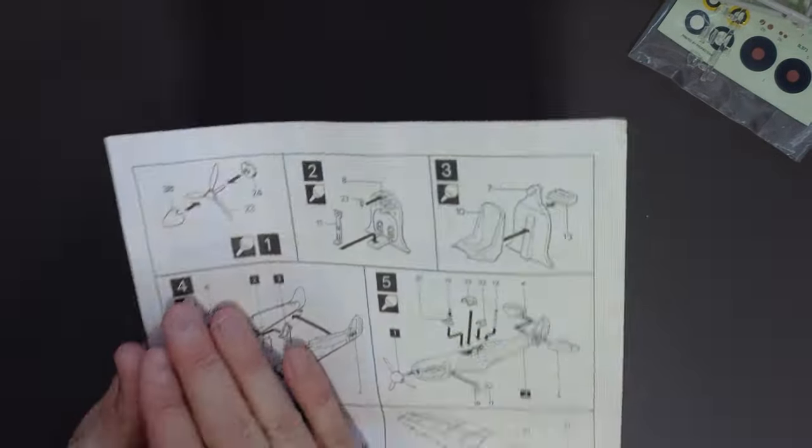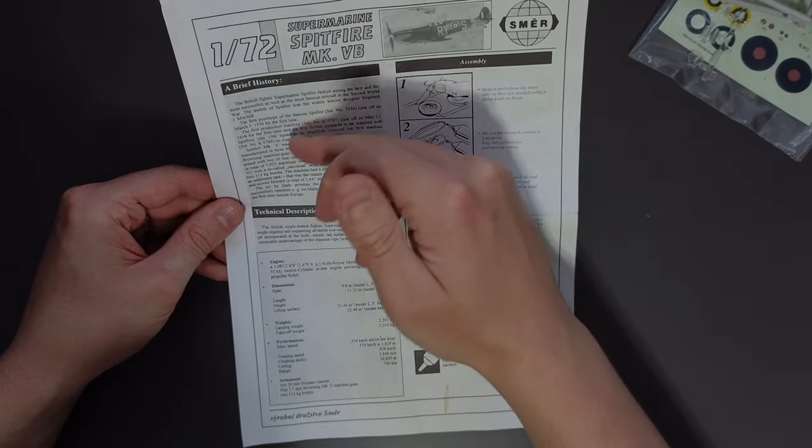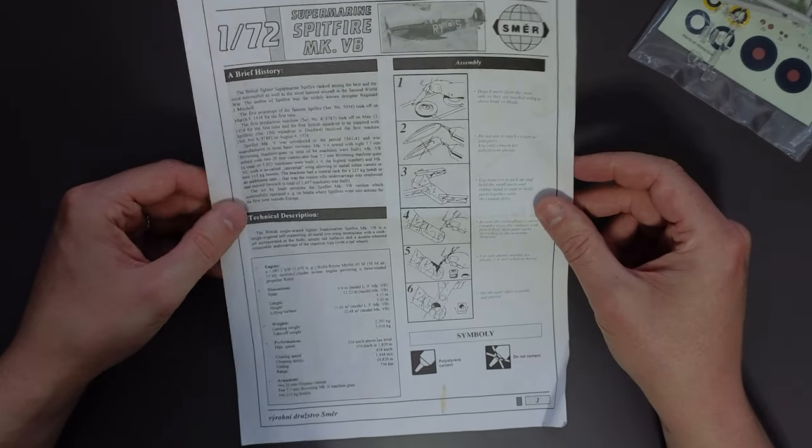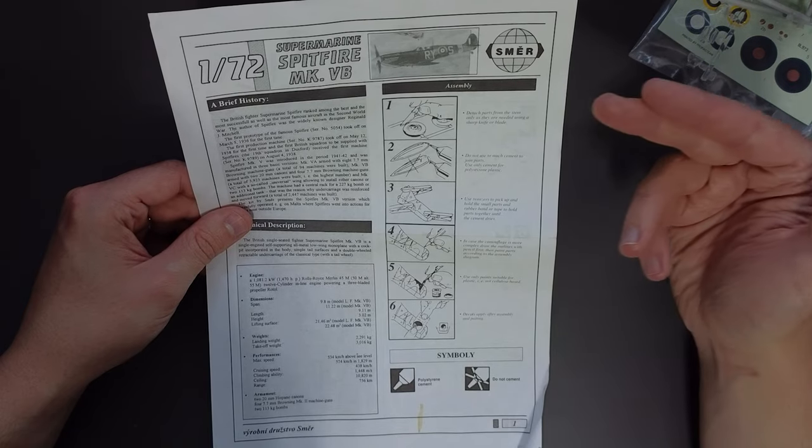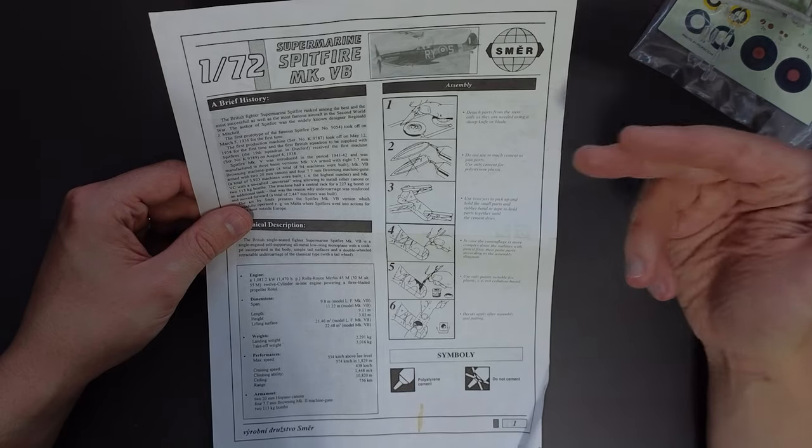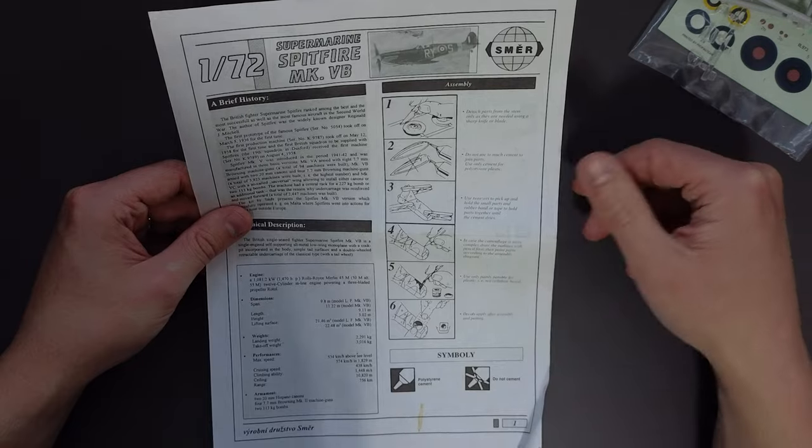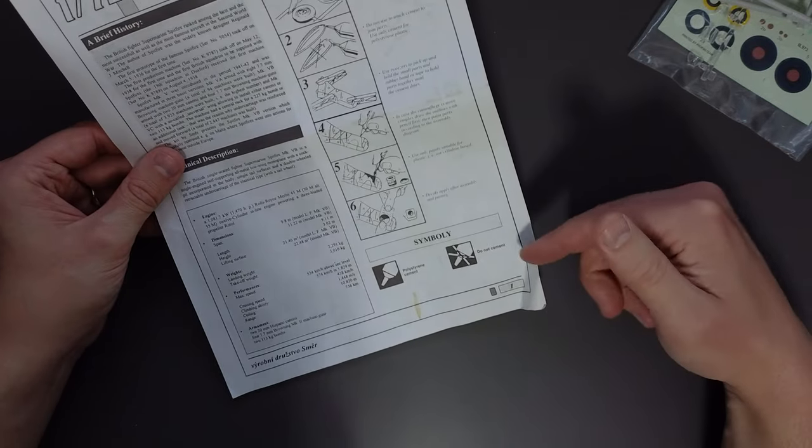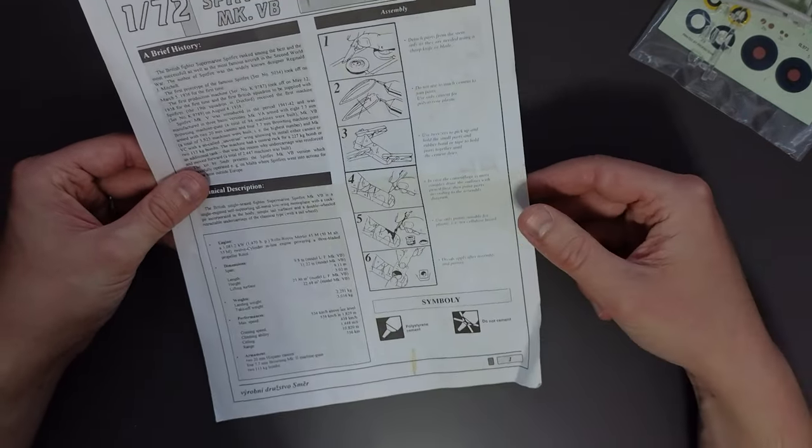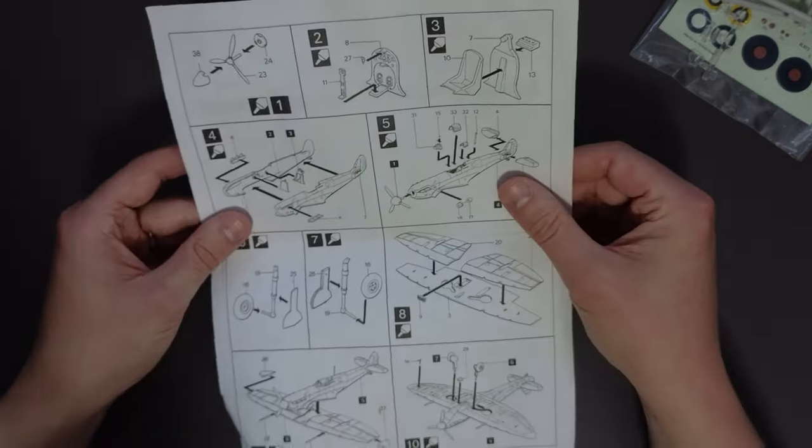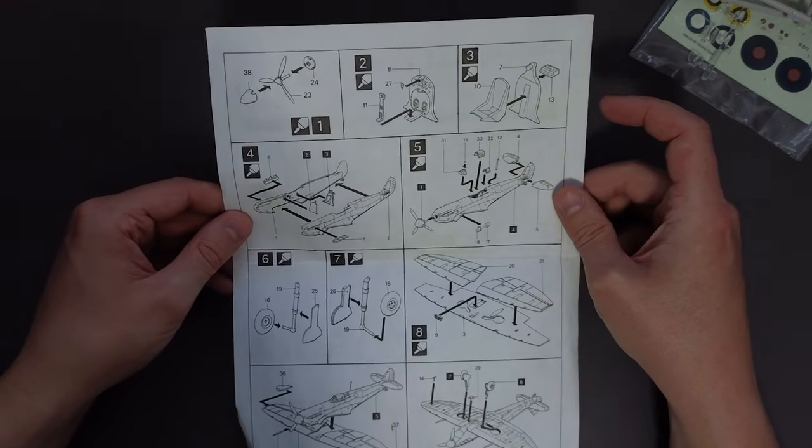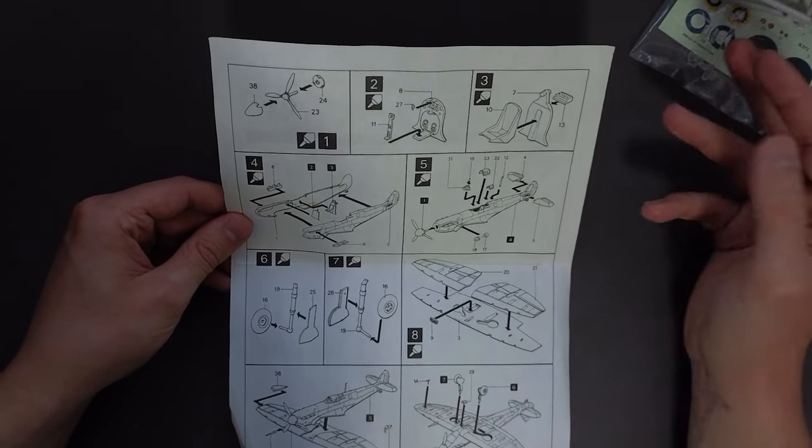So all in black and white. This is about the history at the top and then some technical stuff here. And then we have some assembly tips about how to detach our parts. How to use our cement using pegs. How to apply the transfers. And then a key to the different symbols down the bottom that we're going to encounter. Which is either glue or don't glue. Flipping over then we've got our assembly stages. And there are ten in total it would appear.